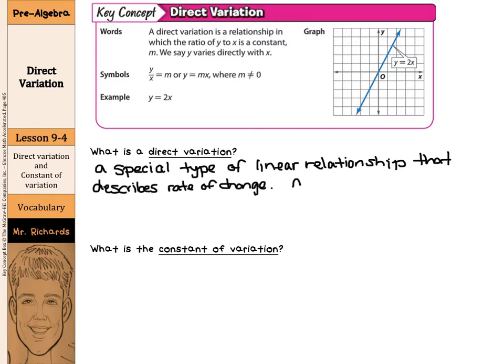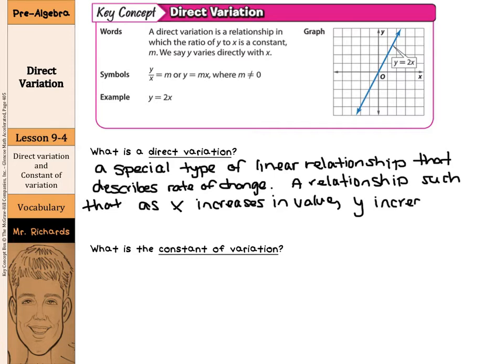A relationship such that as X increases in value, Y increases or decreases at a constant rate.